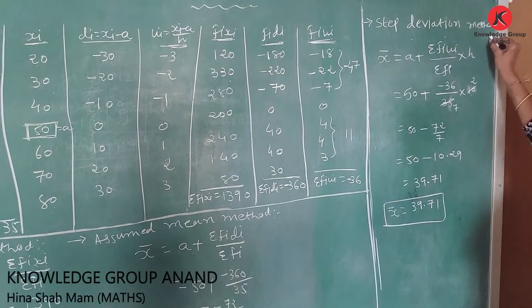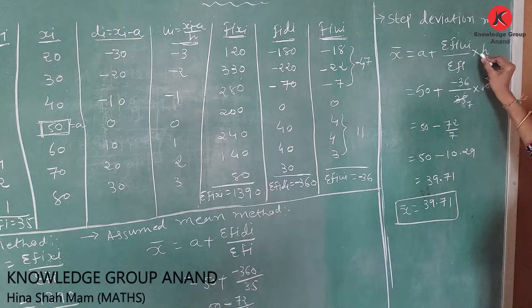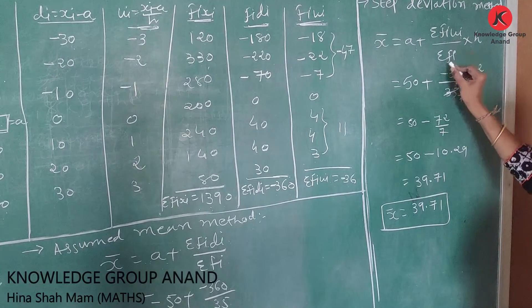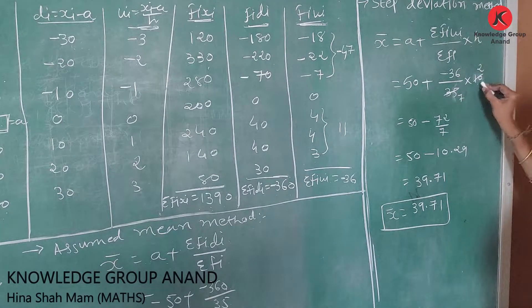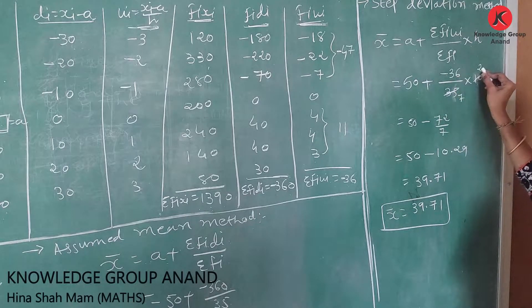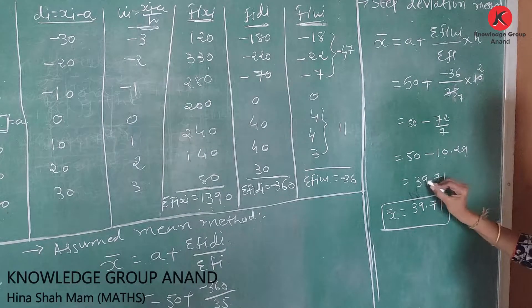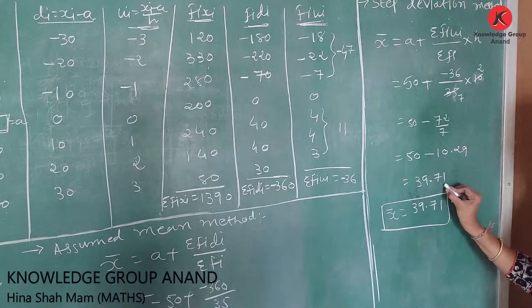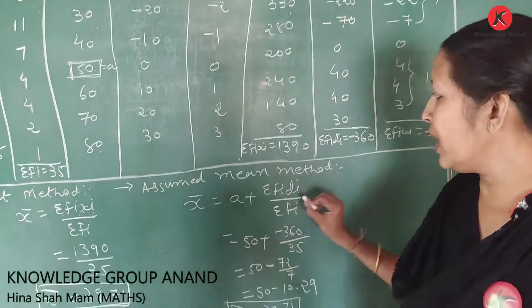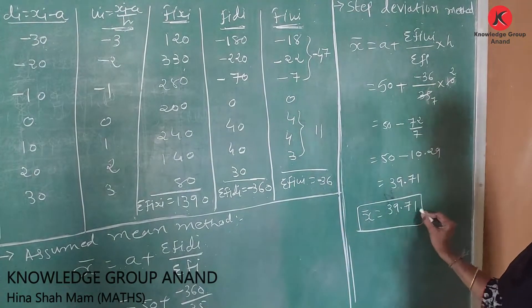In all three methods — direct method, assumed mean method, and step deviation method — x̄ is the same answer: x̄ = 39.71.